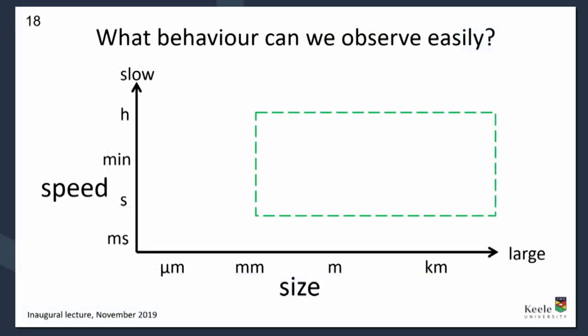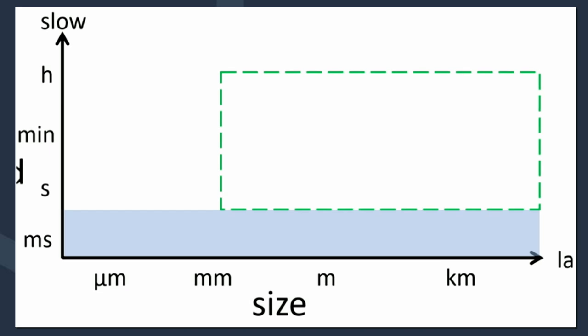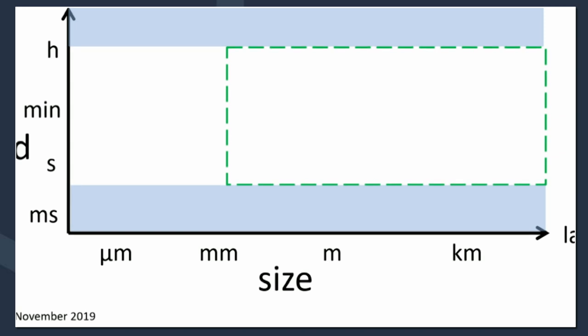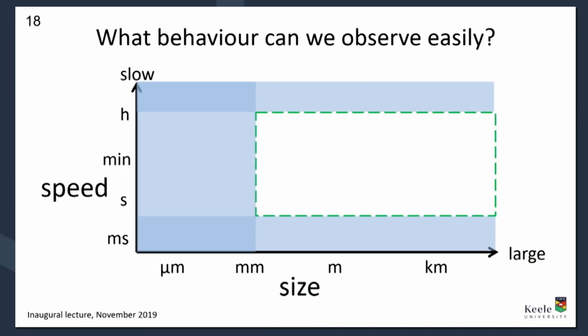I've put on a rough box within which we can observe things easily. Things that happen very fast — in milliseconds — we can't observe below that dotted line. If it's very slow, like the growth of plants or roots growing, it happens but we don't observe it without special measures. If it's very fast we could slow it down with film; if it's very slow we could speed it up with time lapse. And there are things too small — microscopic, below about a millimetre. So there's a range where things are either too fast, too slow, or too small for us to observe easily.